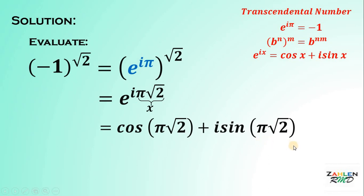Therefore, this is now the value of negative 1 raised to square root of 2. And we can approximate these values. We have negative 1 raised to square root of 2 is approximately equal to negative 0.2662 minus 0.9639 I. This is the value of negative 1 raised to square root of 2.